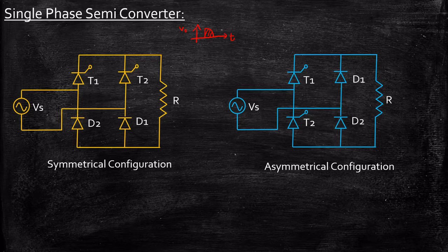What is symmetrical and asymmetrical configuration? Symmetrical configuration will have one SCR in each leg — one leg has only one SCR. Whereas in asymmetrical configuration, both SCRs will be on the same leg. The major advantage of having one SCR in each leg is that the cathodes of both switches are connected to the same point, so T1 and T2 can be triggered with a single gate circuit. In asymmetrical configuration, the cathodes of T1 and T2 are not connected to the same point, so you need two separate gate circuits. As a result, in industrial applications, we always prefer symmetrical configuration over asymmetrical configuration.